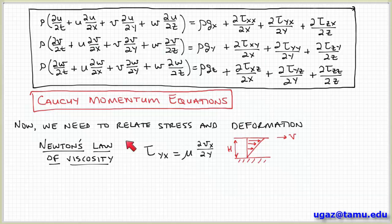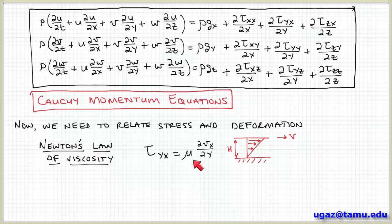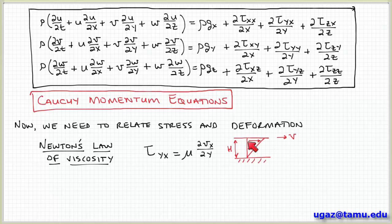We already know how to do that. One way to relate stress and deformation is Newton's law of viscosity, which relates the shear stress tau_yx to the rate of deformation times a constant viscosity coefficient mu for a Newtonian fluid. If the viscosity coefficient doesn't depend on the rate of deformation, we can write it as mu. This was illustrated using flow between two plates with a gap of width h, where the top plate moves with velocity v. These are called constitutive relationships — they connect stress to rate of deformation in the material.